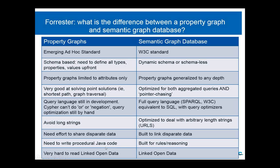If you want to work with rules or inferencing in a property graph database, that is still in development. Whereas all semantic graph databases — whether Oracle, AllegroGraph, Virtuoso, BigData, or others — have inferencing built in. Most triple stores even have a rule language; sometimes it's SWRL, and AllegroGraph has Prolog. So if you want to treat your database as a knowledge base and do interesting inferences, it's all built in from the start.